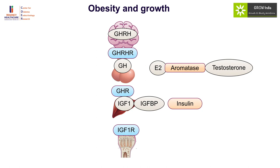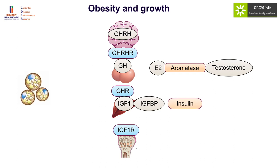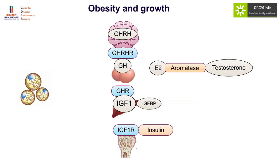Obesity has a significant impact on growth. The body needs a particular amount of leptin and adiposity to start growing. Obesity is also associated with insulin resistance, causing a decrease in insulin-like growth factor binding protein, which results in increased free IGF-1 and increased growth. Insulin can also act on the IGF-1 receptor, and there are also effects through aromatase — since there is more aromatase in adipocytes — and estrogen can stimulate further growth hormone secretion.